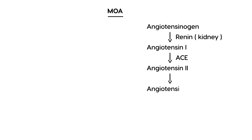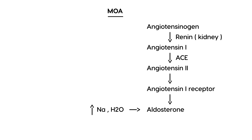Angiotensin 2 acts on the angiotensin 1 receptor, and that leads to the production of aldosterone. This is the hormone that increases sodium and water reabsorption, resulting in increased blood pressure. So when everything's working normally, this is the cascade. An ACE inhibitor blocks this step, so you don't go on to get aldosterone — instead of blood pressure going up, it actually goes down.